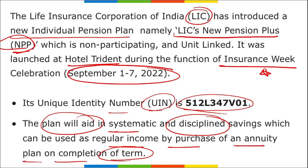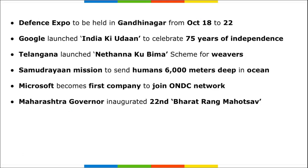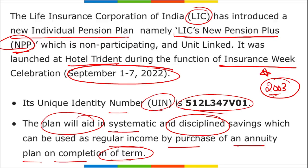This plan aids systematic and disciplined savings which can be used as regular income by purchasing an annuity plan on completion of term. It is designed for those in the private sector who lack a traditional pension. The government pension scheme applies only to employees appointed before 2003. The entry age for the NPP scheme is a minimum of 25 years and a maximum of 75 years.